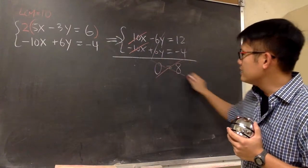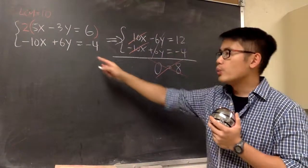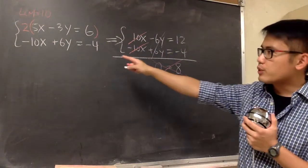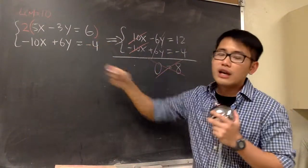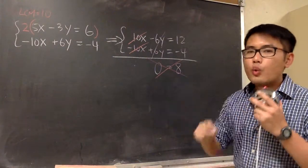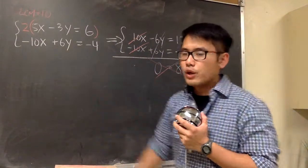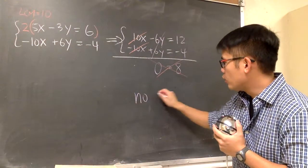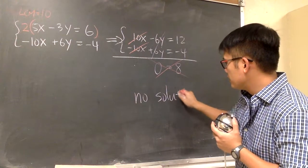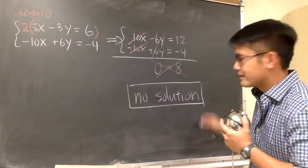So right here, this is a false statement. And the response to this is that we will know that the original system of equations has no solution. And this right here is the indication. Whenever we end up with a false statement, the system of equations has no solution. And this right here is it.